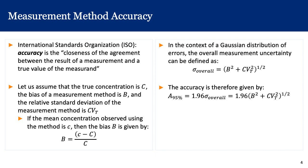Another way to describe measurements is using measurement method accuracy. The International Standards Organization, ISO, defines accuracy as the closeness of the agreement between the result of a measurement and the true value of the measurement. Assume the true value of the concentration is C, the bias in the measurement method is B, and the relative standard deviation is the total coefficient of variation Cv_t.